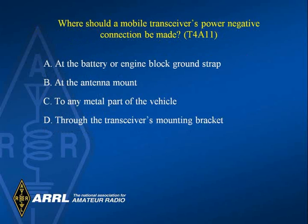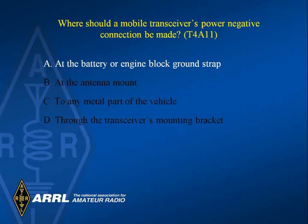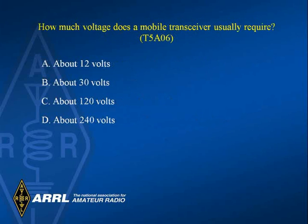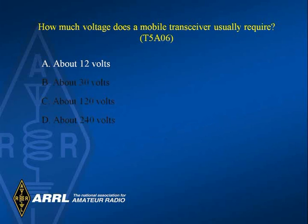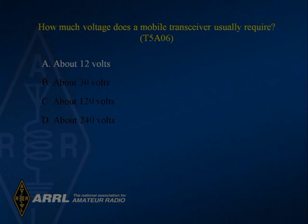Where should a mobile transceiver's negative power connection be made? Answer A: At the battery or engine block ground strap. How much voltage does a mobile transceiver usually require? Answer A: About 12 volts.